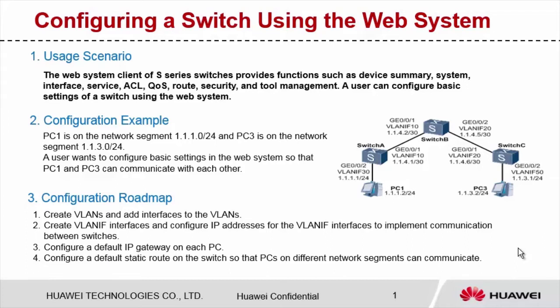I will use an example to describe how to configure a device using the web system. As shown in the figure, PC1 is on the network segment 1.1.1.0/24, and PC3 is on the network segment 1.1.3.0/24. Configure basic settings in the web system so that PC1 and PC3 can communicate with each other.